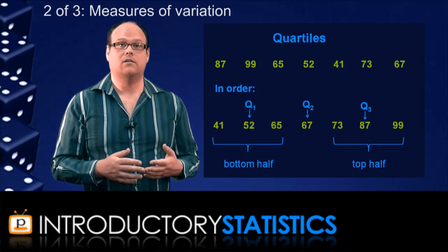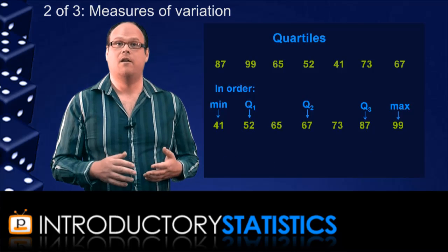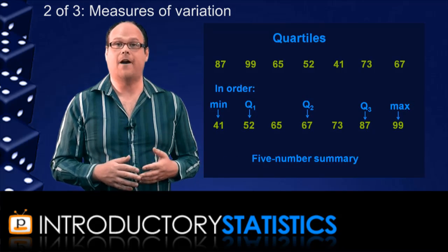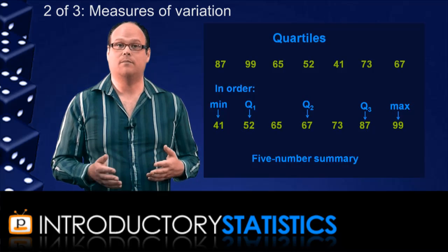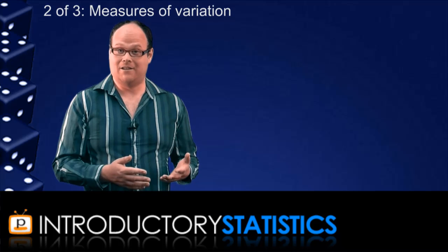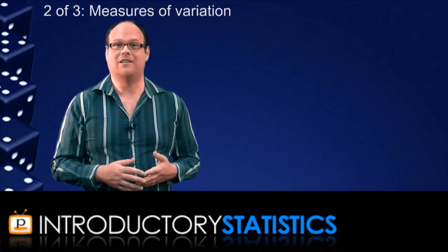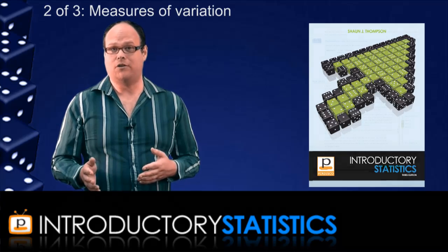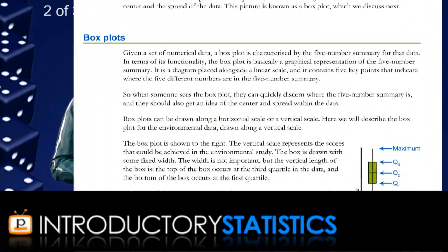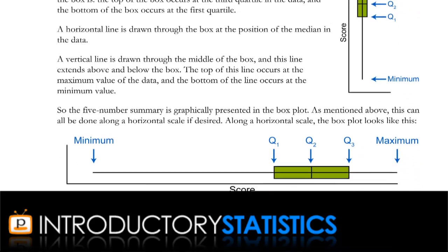The three quartiles, together with the minimum and maximum, form what is called the five-number summary. The five-number summary can be represented graphically with a thing called a box plot. This talk is just a summary, so I won't go into detail here on exactly how the box plot is constructed. If you want to read more about how to construct or interpret a box plot, you can read all about them in the Pedisco introductory statistics textbook.